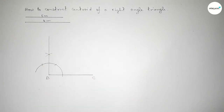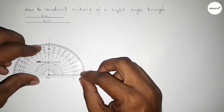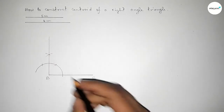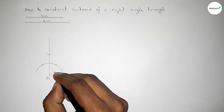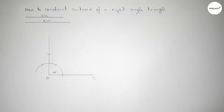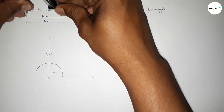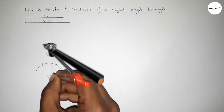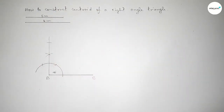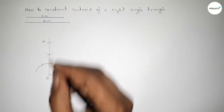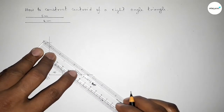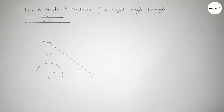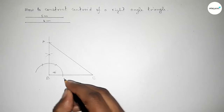Now joining this line to get a 90 degree angle — checking this angle, and this is perfectly a 90 degree angle. Now taking the length five centimeters by using the compass, putting it on point B and cutting here to get point A. Joining A and C — this is the hypotenuse of this right angle triangle, with this side six centimeters and this side five centimeters.